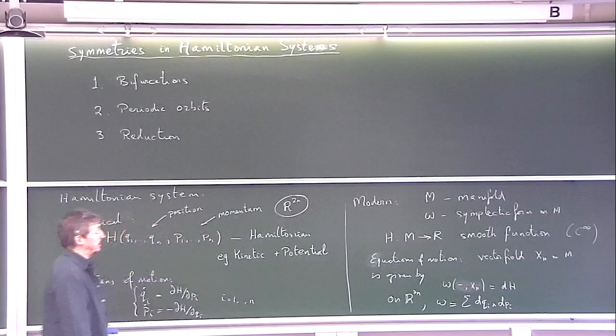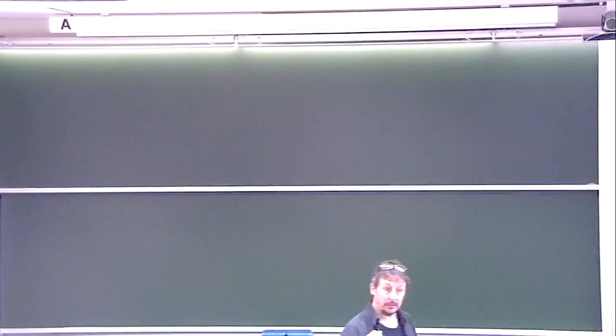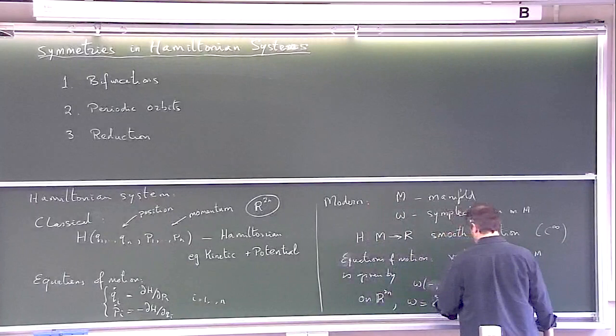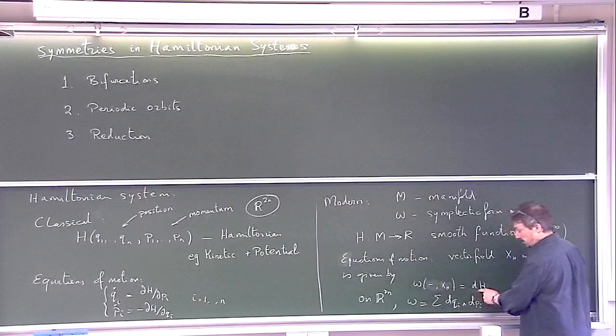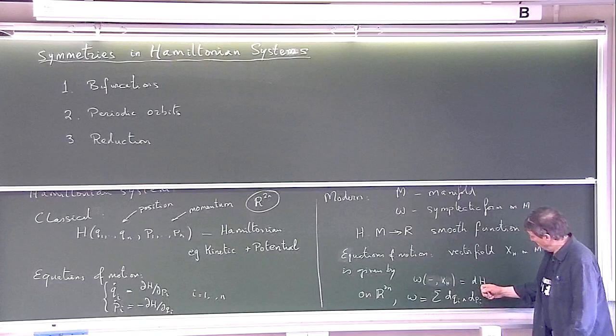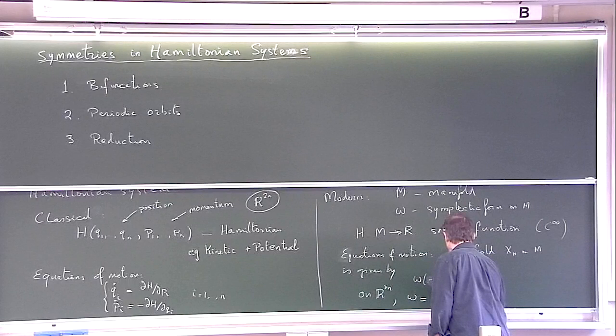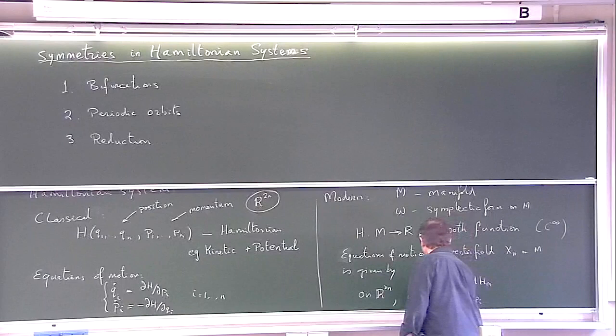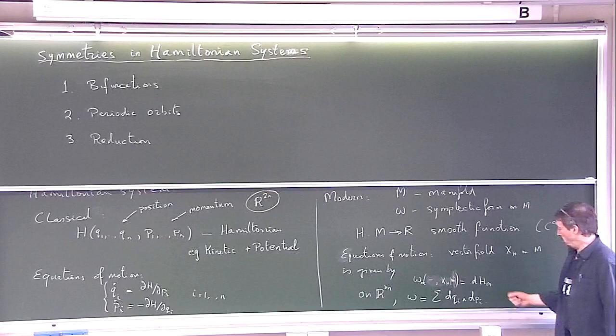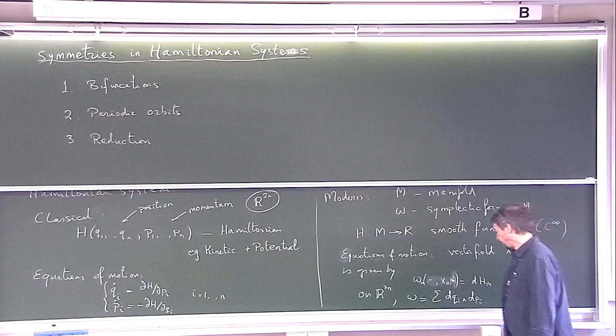The important thing about the symplectic form is it's non-degenerate. This means that if we think of it as a linear map from vectors to co-vectors, then it's invertible. So given dH at the point m, we have this equation, so given this we can solve uniquely for the vector field. This determines the vector field.